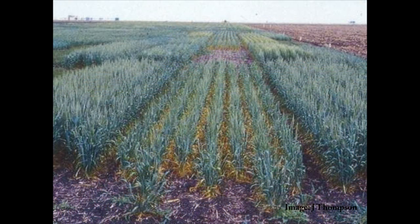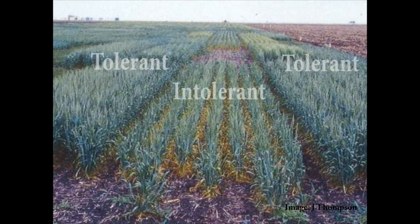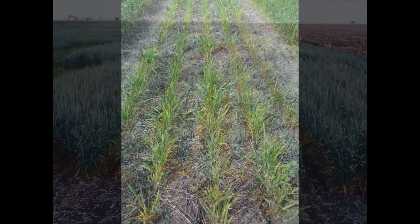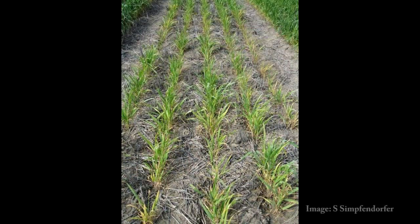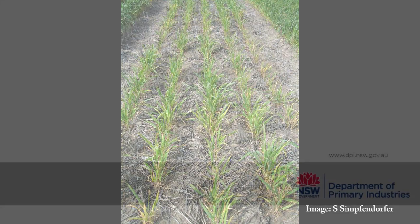Research has shown intolerant wheat varieties can lose between 50 and 70% of their yield when nematode populations are high. Intolerant chickpea varieties have been known to lose 20% of their yield. More recently, NSW DPI research in 2011 recorded yield losses of up to 43% in intolerant wheat varieties.